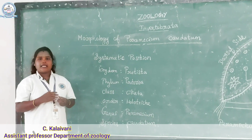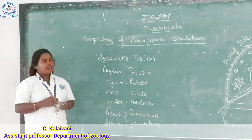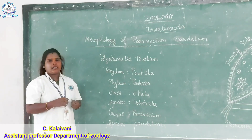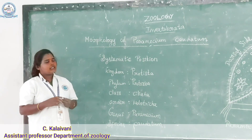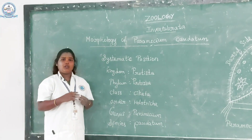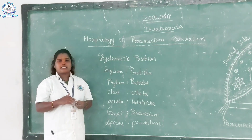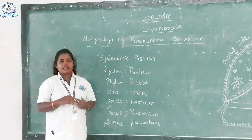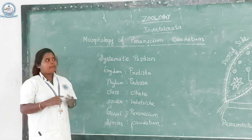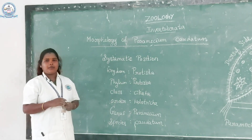Next, the body is asymmetrical, bilaterally symmetrical, or radially symmetrical. The organ systems are not well developed because they contain a single cell only. The organization is protoplasmic grade of organization. Locomotion is the movement of an organism from one place to another place. In protozoans, the major locomotory organs are cilia, flagella, and pseudopodia. Cilia are present in Paramecium, flagella in Euglena, and pseudopodia in Amoeba.